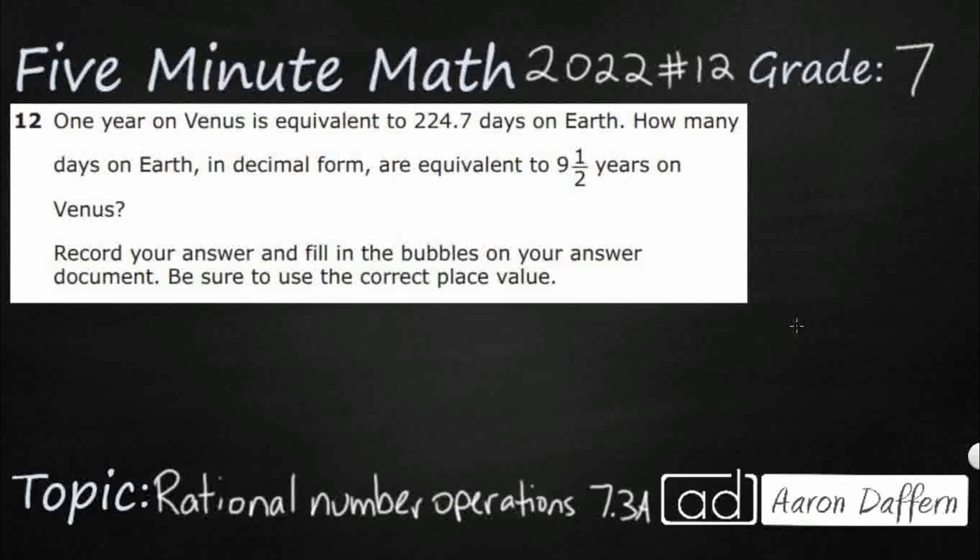We have a year on Venus equal to 224.7 days on Earth. So how many days on Earth in decimal form are equivalent to 9 and a half years? Okay, so I'm just going to draw a year right here. So that's one year and that's worth 224.7 days.